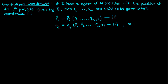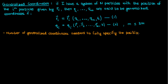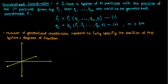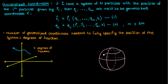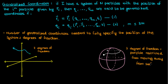In three-dimensional space, we would expect the number of generalized coordinates to be less than or equal to three times the number of particles. The number of generalized coordinates needed to fully specify the position of the system is called the degrees of freedom. For example, a particle moving freely in empty space has three degrees of freedom — one for movement in the x-direction, one for the y-direction, and one for the z-direction. However, a particle moving on the surface of a sphere has only two degrees of freedom, because the particle is restricted from moving away from the surface of the sphere, which essentially confines it to moving in only two dimensions.